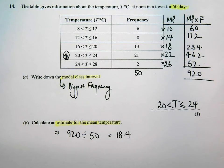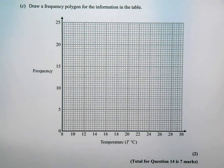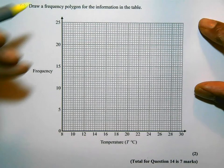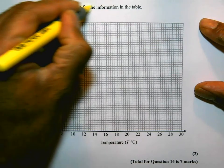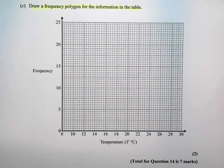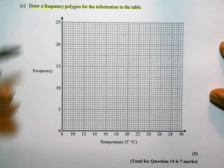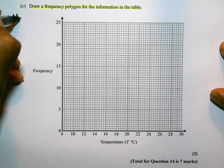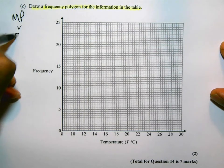Part C says, draw a frequency polygon for the information in the table. You need to remember that for a frequency polygon, it's the midpoint against the frequency that you plot.